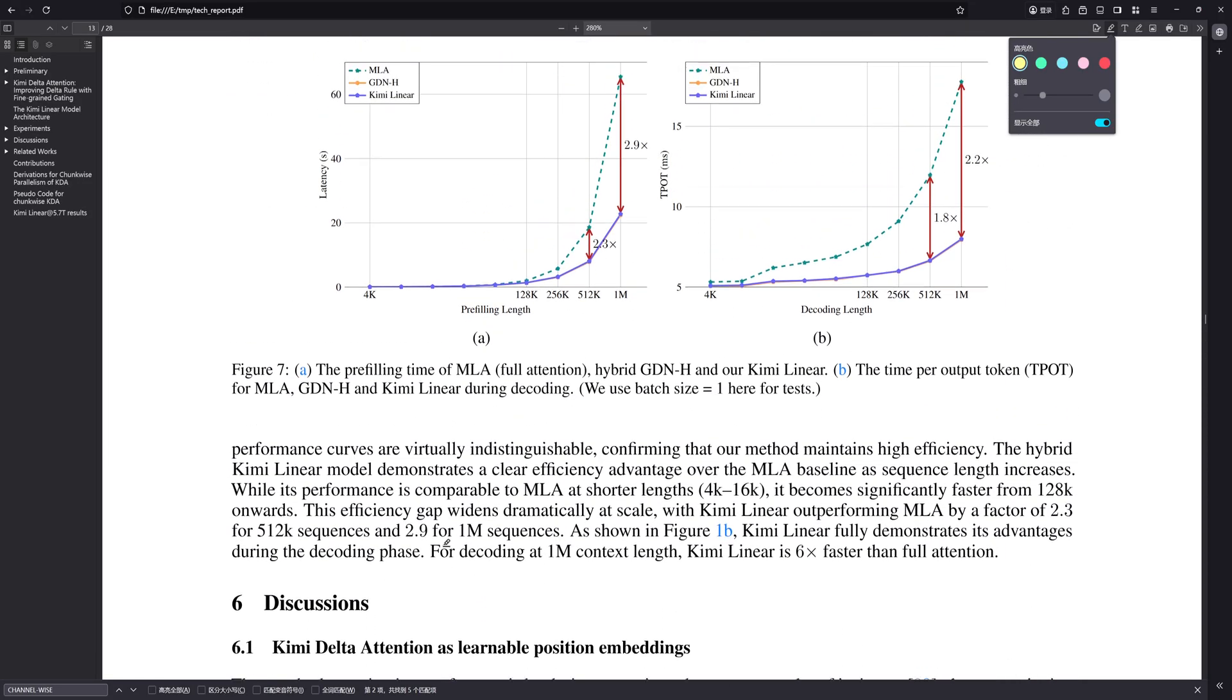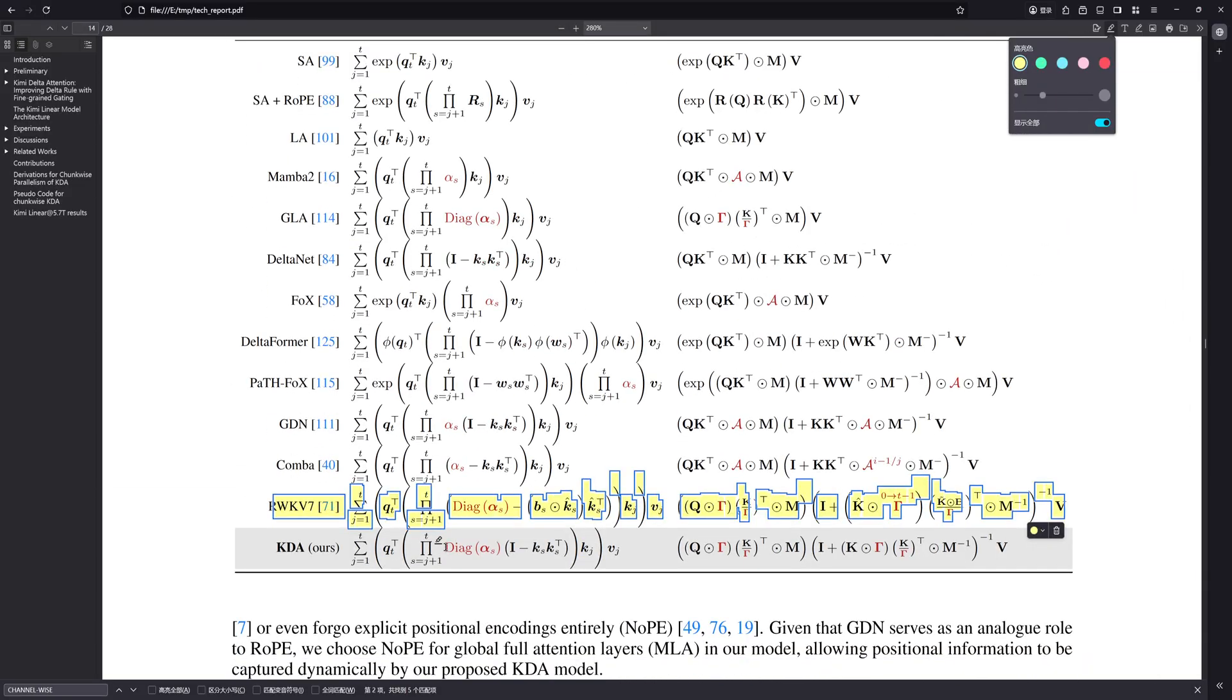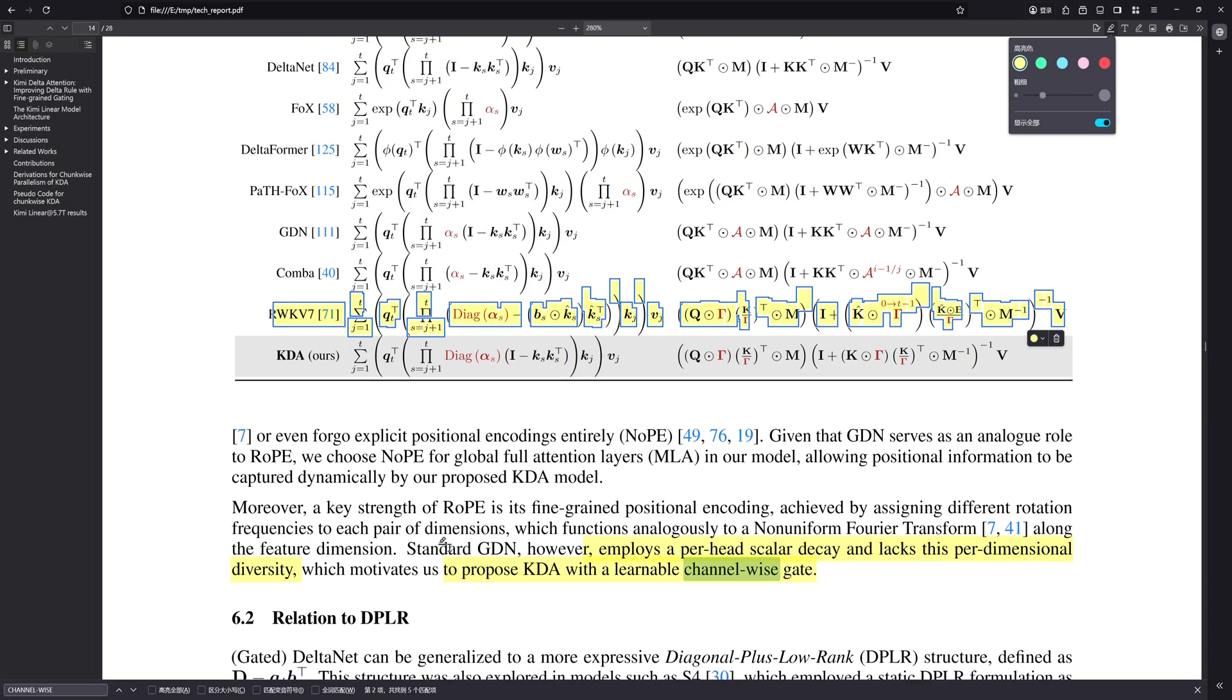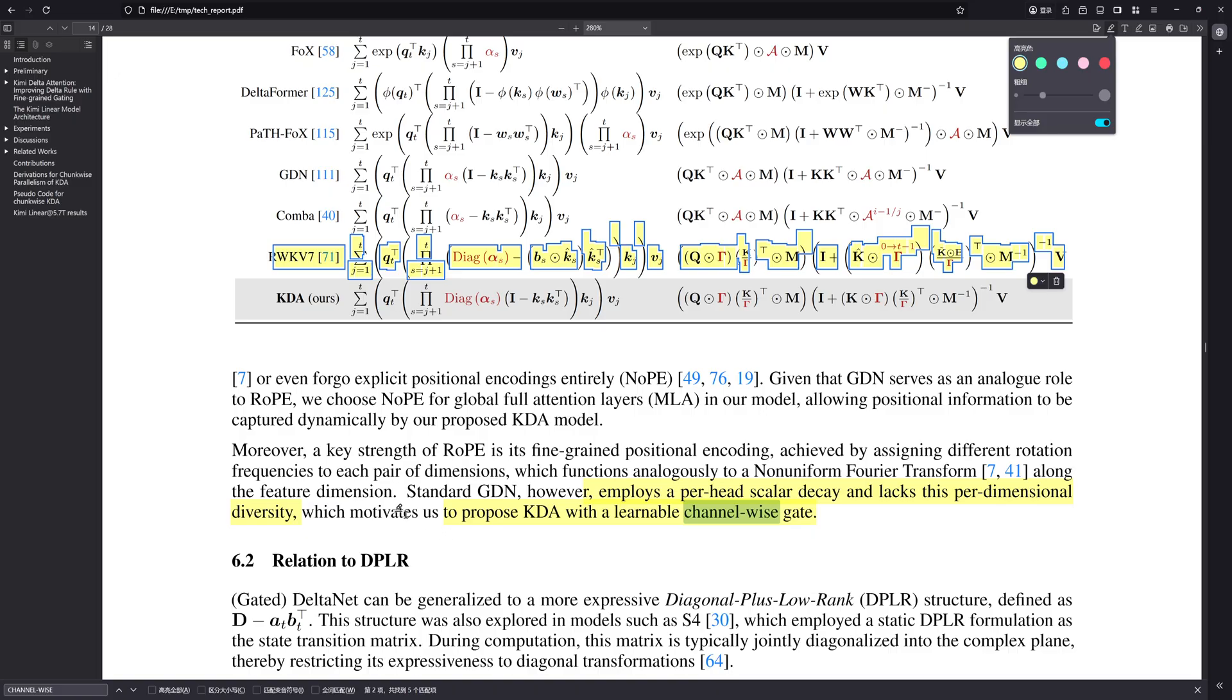Hmm, I'll let C at a circumvention. Let's dig into that channel-wise gating a bit more. I believe moving from head-wise to channel-wise decay isn't just a tweak. It's a critical conceptual advance. It allows KDA to function as the primary position-aware operator in the whole architecture. How? Well, this channel-wise decay effectively acts like a learnable, data-dependent, multiplicative positional encoding.